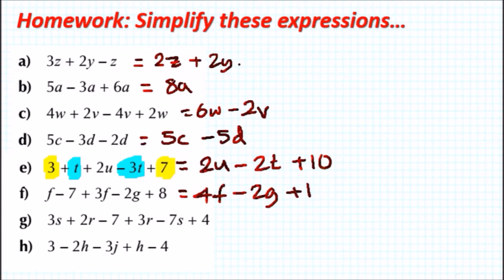Final two problems. We've got 3s + 2r - 7 + 3r - 7s + 4. Okay, that's a mouthful, so let's just break it easy. Let's start with r's actually. We've got 2r + 3r which is 5r. And then s terms, we've got 3s - 7s which is obviously -4s. And lastly the numbers, we've got -7 + 4 which is -3.